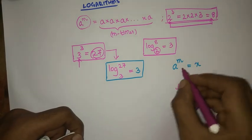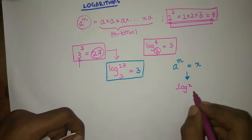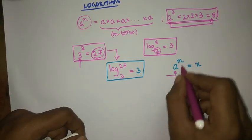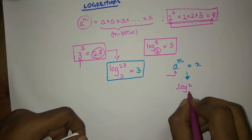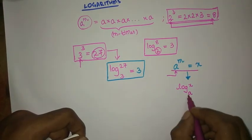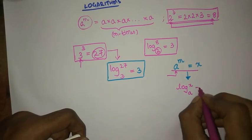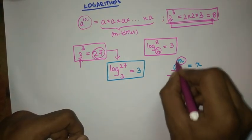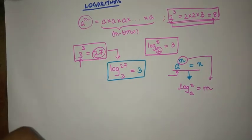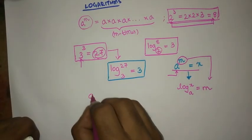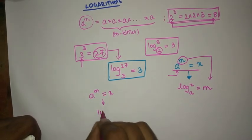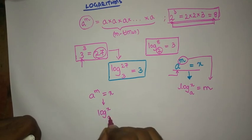The answer must be written at the top, and the base — which is a — must be written as the base here, same base. So whatever base is in the exponent form, that base you must write here. This is equal to the power, which is m. So if a power m is equal to x, its logarithmic representation is log x base a is equal to m.